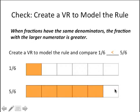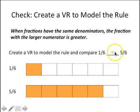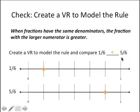Here's what your work should look like if you made bar models: we've got one-sixth compared to five-sixths, and five-sixths is clearly greater. Here's what your work might look like if you made number line models.